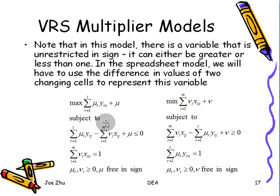But since we have the notion of input orientation and output orientation from the Enveloped Model, and these models are equivalent, this model is equivalent to the input-oriented VRS Enveloped Model, so we just use the input orientation here.